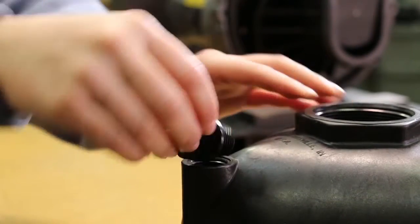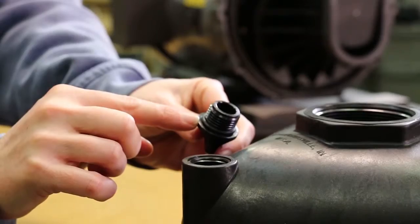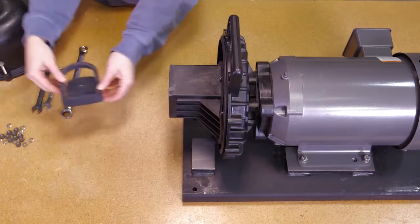Unscrew two plugs to check O-rings and replace if necessary. Remove the check valve from the volute.